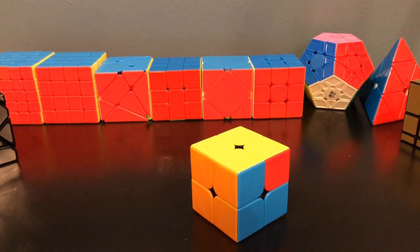Now that you have oriented both layers, the last step is PBL, which means permutation of both layers. Surprisingly, there are less cases for this than OLL. There are only five cases, and two you've probably already heard of if you can solve a three by three.